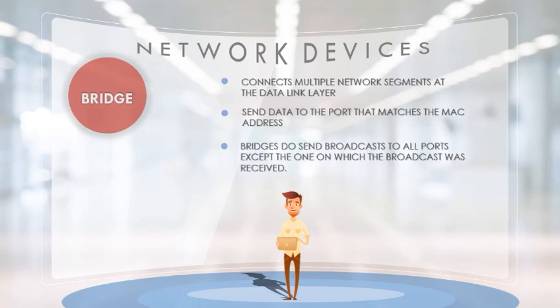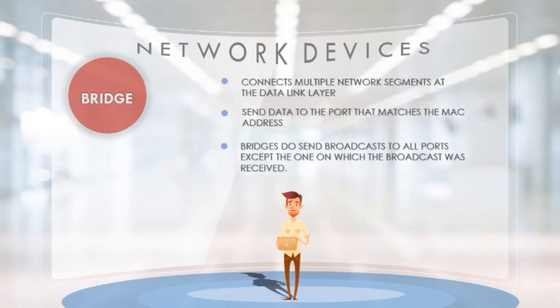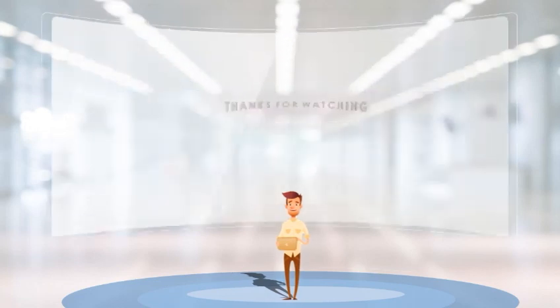Next is a bridge. A bridge connects multiple network segments at the data link layer and sends data to the port that matches the MAC address. Bridges do send broadcasts to all ports except the one on which the broadcast was received. It is similar to a hub in appearance, but unlike a hub, the bridge does not bounce the broadcast back to the originating port, so the probability of data bouncing back is eliminated.